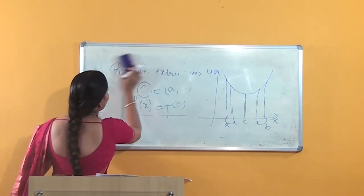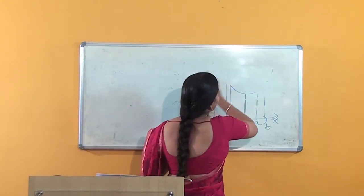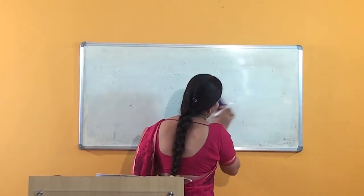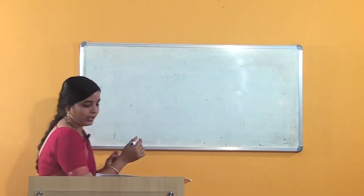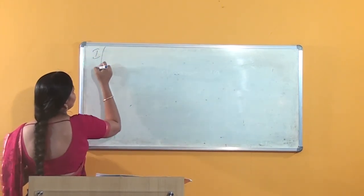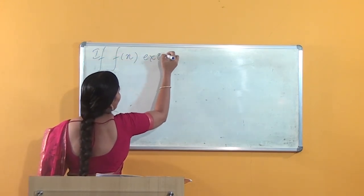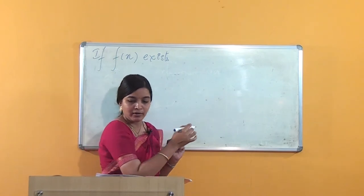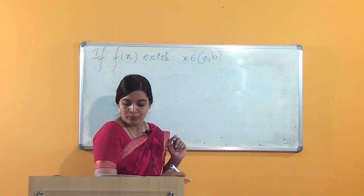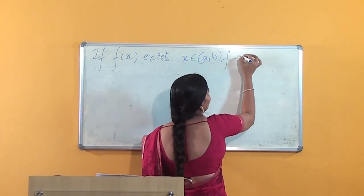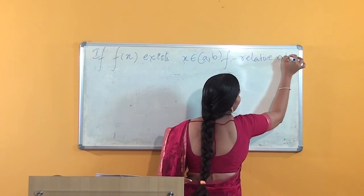If the graph has either the relative maximum value or the relative minimum value, then we call it as having a relative extremum value at the point c, which belongs to the open interval (a, b). Now we will learn one theorem related to this concept: if f(x) exists for all x in the open interval (a, b) and f is having the relative extremum value...